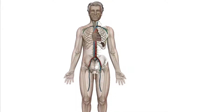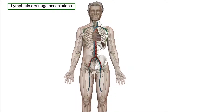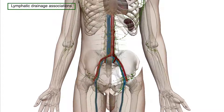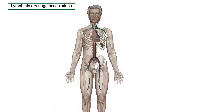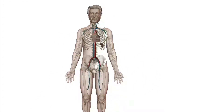We shall be talking about lymphatic drainage and association in this lecture. There are 11 lymph node clusters that you need to know for the USMLE or the Comlex exam. We shall be looking at the areas of the body that are being drained and the associative pathology you need to know for the board exam. We shall look at lymph node clusters, areas of the body drained, and associative pathology.